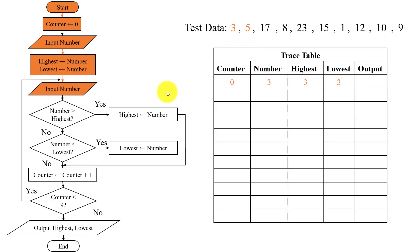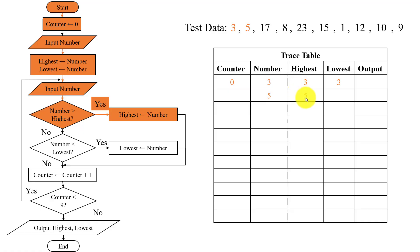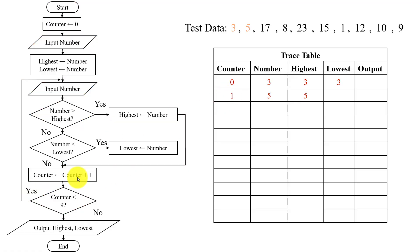Then input another number, which is 5. 5 will be placed in the number column. Now check if number is greater than highest: current value of number is 5 and highest value is 3, so 5 is greater than 3 — yes. Highest will now be 5. Moving forward, we will increment the counter by 1, so it will be 1. Counter is less than 9: 1 is less than 9 — yes.